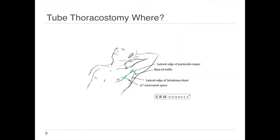Where do we actually want to do the procedure? It's going to be in the triangle of safety, which we should always remember. We look for these anatomical landmarks: the base of the axilla, the lateral edge of the latissimus dorsi, the pectoralis major lateral edge, and the fifth intercostal space. We want to do it in this triangle because when we breathe, the diaphragm rises to about the level of the nipple, and this area is the least muscular part of the chest wall, making it easier to gain access to the pleural cavity.